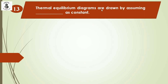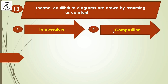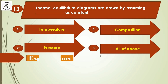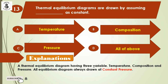Next question: Thermal equilibrium diagrams are drawn by assuming which is constant? Option A: temperature. Option B: composition. Option C: pressure. Option D: all of the above. Thermal equilibrium diagrams have three variables — temperature, composition, and pressure — and for every diagram, pressure remains constant. All samples or practicals are conducted at constant pressure, i.e., one atmospheric pressure. The right answer is option C, constant pressure.